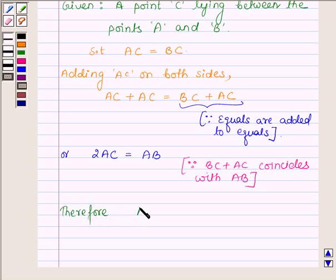Therefore AC is equal to half of AB. Thank you and bye for now.